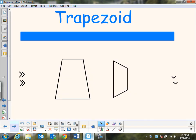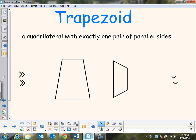First one is the trapezoid. The trapezoid is a quadrilateral with exactly one pair of parallel sides. Exactly is the key word. So here we have an example where the top segment and the bottom segment is parallel. Here you have the left segment parallel to the right segment.